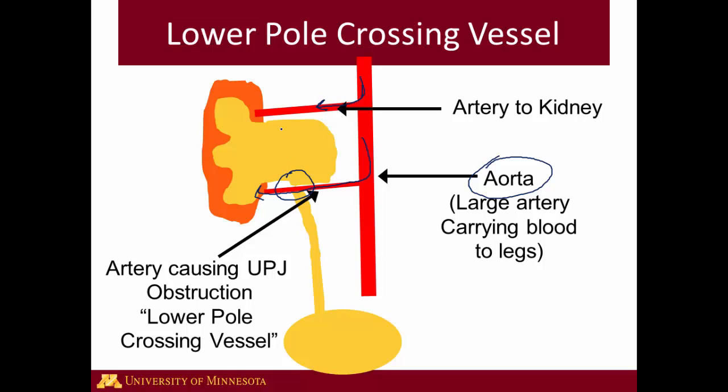Essentially what's happening is the artery is laying on the ureter and compressing it, making it hard for urine to get down the ureter. So even though the caliber of the ureter may be normal and may have a normal opening, because of the compression from the lower pole crossing vessel, the urine is not able to make it down to the bladder. This causes blockage — the urine is not able to make it down — and pushes out and causes dilation or hydronephrosis.